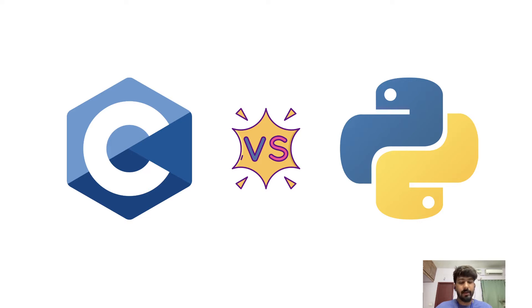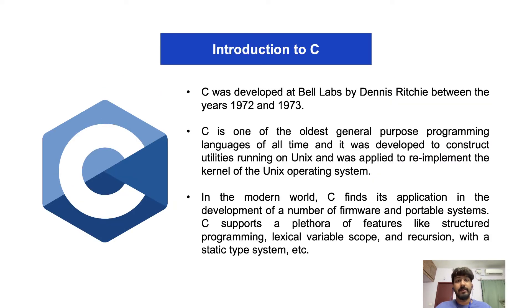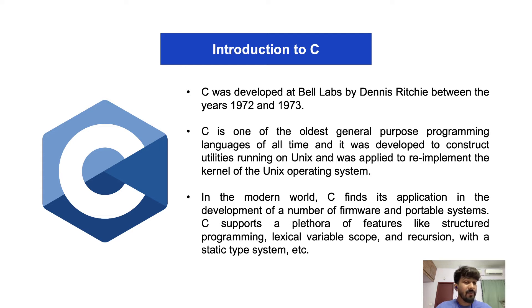First let's understand what C is. C was a programming language developed at Bell Labs by Dennis Ritchie between the years 1972 and 1973. It's one of the oldest general purpose languages of all time, and it was developed to construct utilities running on Unix. It was applied to re-implement the kernel of the Unix operating system.